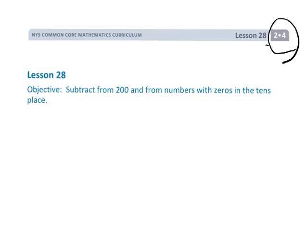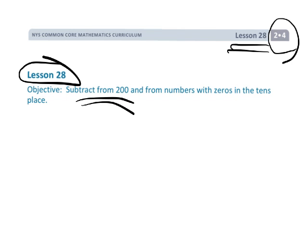This is Grade 2, Module 4, Lesson 28. This is a continuation of the previous lesson where students are going to be practicing subtracting, oftentimes having to unbundle twice in order to begin the subtraction process. The theme of this lesson is we're going to continue trying to use the standard algorithm.